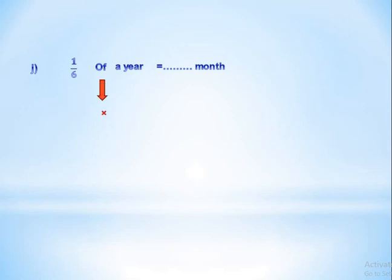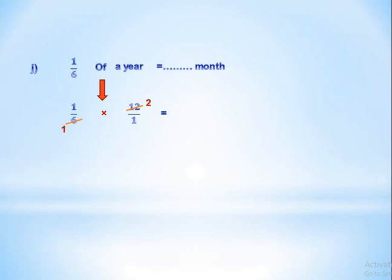Letter J: one-sixth of a year equals how many months? A year equals 12 months, and 'of' means multiply. So we multiply one-sixth by 12. We write 12 over 1 and simplify 6 and 12 — both in the 6 times table — dividing both by 6: 6 divided by 6 equals 1, and 12 divided by 6 equals 2. Multiplying gives 1 times 2 over 1 times 1, which equals 2 months.